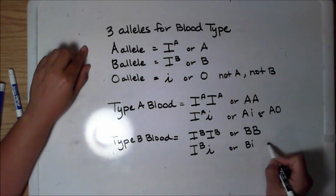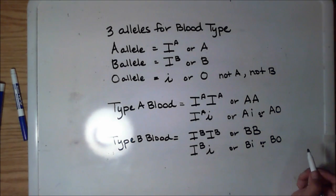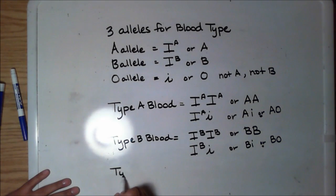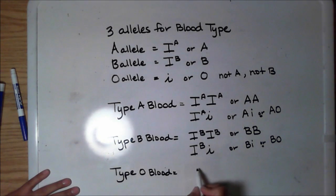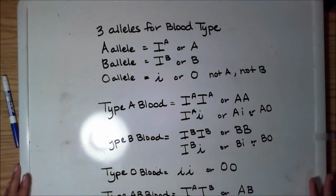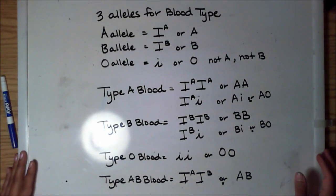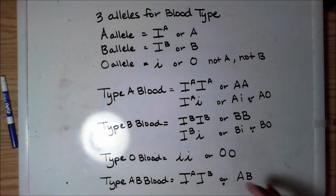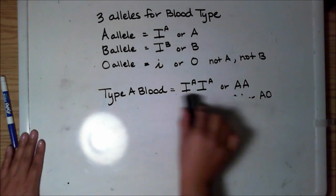The type A allele can also be written using the letter O instead of the lowercase i, so there's more than one way to write the heterozygous person. The type O individual can only be type O by inheriting two recessive alleles, written as two small i's or two letter O's. The type AB person inherits one A allele and one B allele — they don't cancel each other out. They're equally dominant, that's why it's called codominance; they're both expressed.